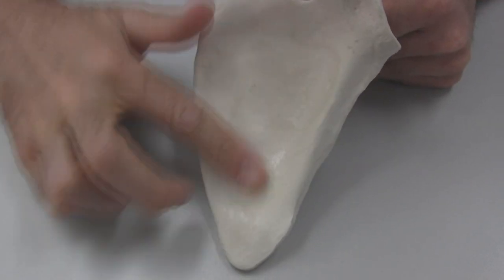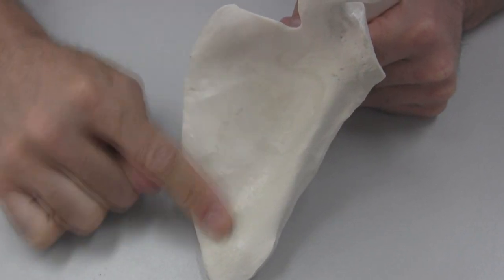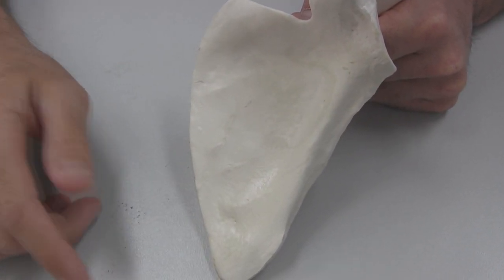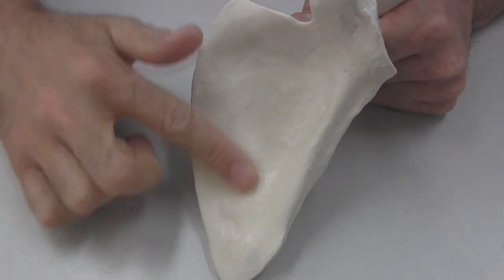Underneath the scapula, we've got what's called the subscapularis fossa. So subscapularis, meaning sub, meaning underneath, underneath the scapula.